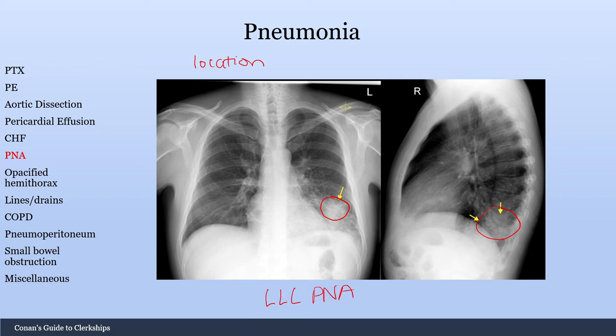This is a sign called the spine sign. On a normal lateral radiograph, the spine should get darker as it goes down. However, if the spine gets lighter or brighter as you go inferiorly, that's a positive spine sign — concerning for something obscuring the view in that area.